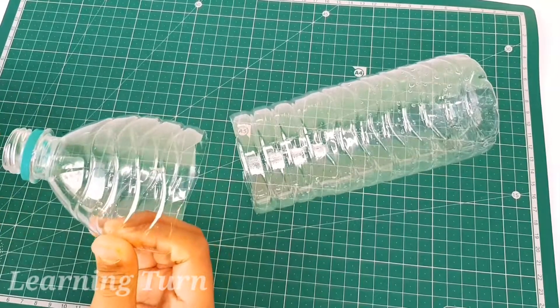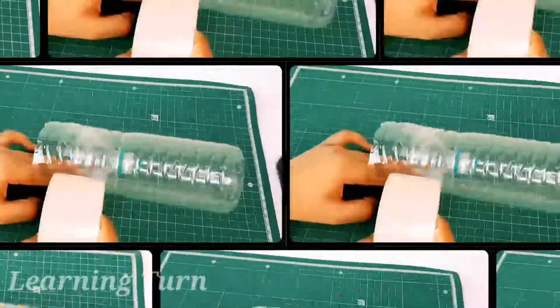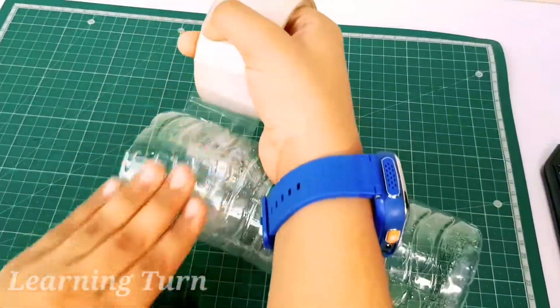Then open the cap, turn it upside down on top of the bottle to create a sort of funnel. Now stick it with some tape.